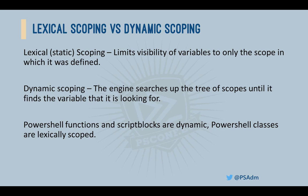Dynamic scoping is a lot more relaxed about where variables are defined. If a variable isn't found in the current scope, the engine will carry on looking up the chain of scopes until the value is or is not found. This adds a lot more flexibility and terseness into how code can be written, at the cost of a higher chance of errors or unexpected results. PowerShell scripts and functions use dynamic scoping.